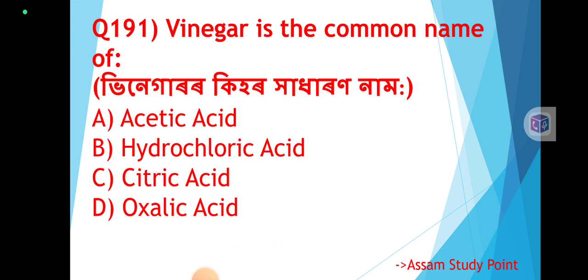Question 191: Vinegar is the common name of — vinegar keehar kharharan nam. The correct answer is Option C. Vinegar kharharan nam — the common name of vinegar (acetic acid).